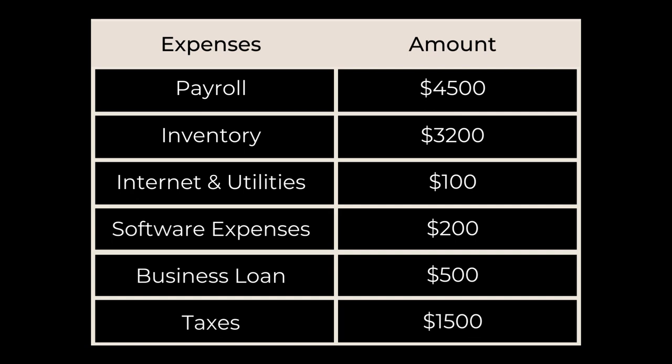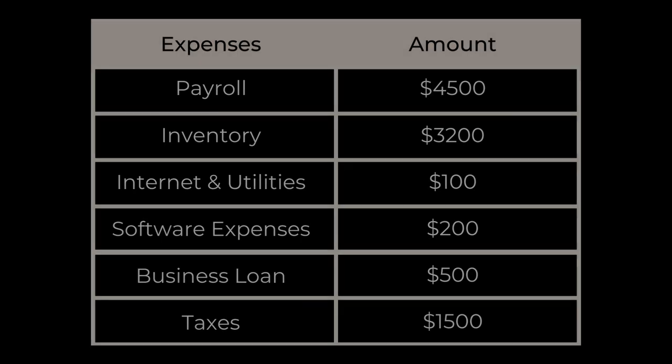You can break your budget down like this: forty-five hundred dollars in your payroll account, three thousand two hundred dollars allocated to inventory, one hundred dollars in your internet and utility account, two hundred dollars for software expenses, five hundred dollars set aside to pay back your loan, and fifteen hundred dollars put away for tax season.